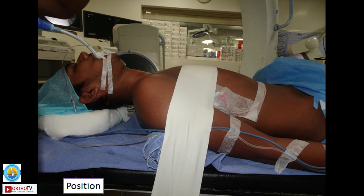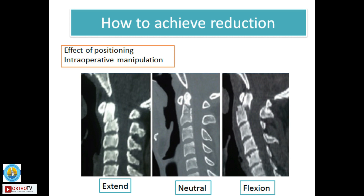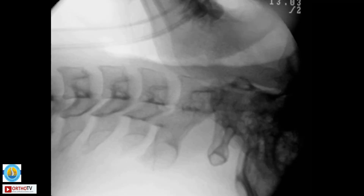The first important step once surgery is planned is positioning of the patient, similar to how you do a classical anterior cervical discectomy. The most important thing is to have a clear angle of approach from the chest to C2. By extending or flexing the neck depending upon the fracture pattern, and if necessary applying traction using a Mayfield or Gardner-Wells tongs, you can achieve the reduction.